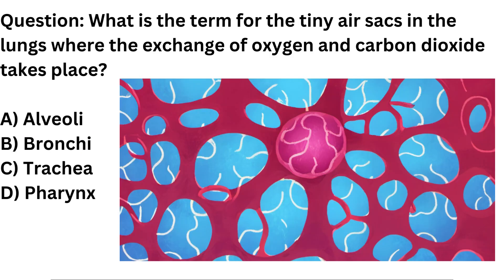Question. What is the term for the tiny air sacs in the lungs where the exchange of oxygen and carbon dioxide takes place? A. Alveoli. B. Bronchi. C. Trachea. D. Pharynx.